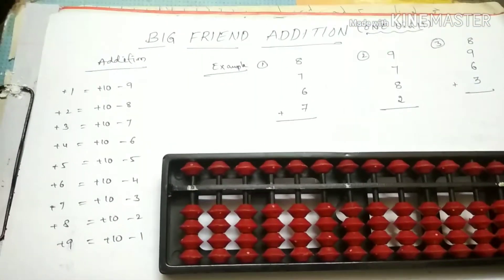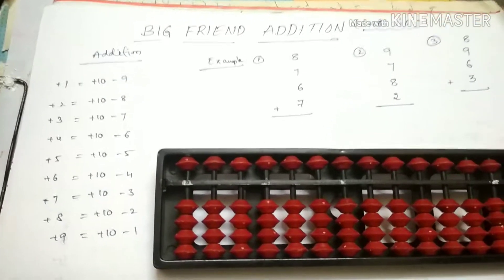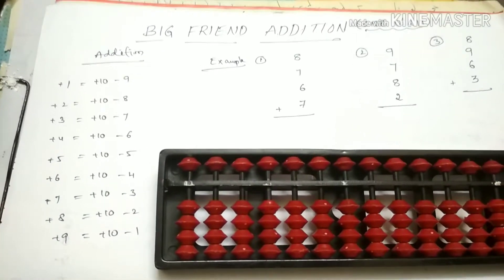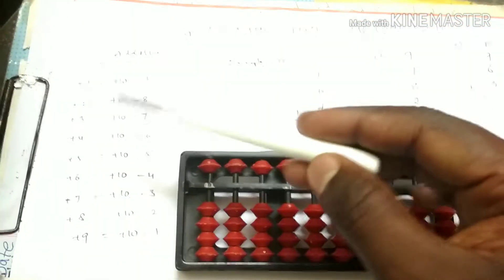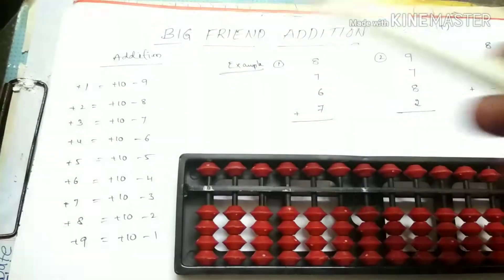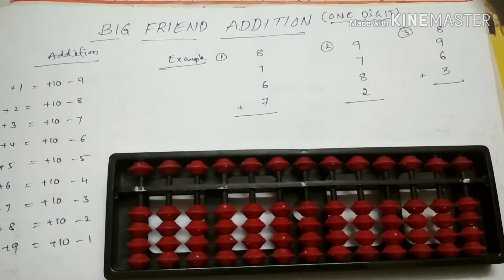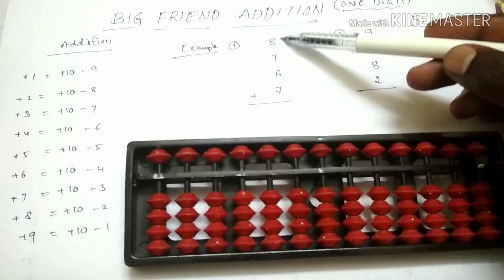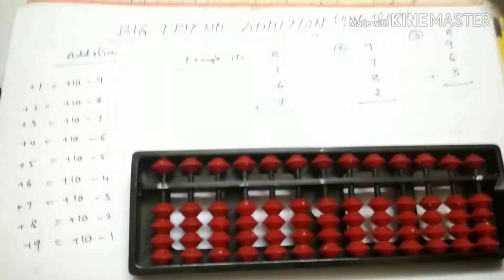Hi, in the previous class we had a new class. In the big friend edition, we had a formula. In addition to the formula, we have got different numbers. By our example, we have a new class — these are numbers of one digit.